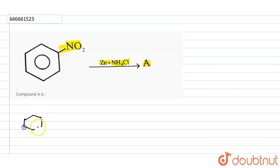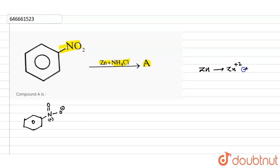Zinc will be oxidized to Zn²⁺, and in that way it will donate electrons. This nitrobenzene can be written with a double bond O and oxygen with a negative charge and a positive charge on nitrogen. Zinc donates two electrons — one electron will come and attack on this nitrogen group, which has a positive charge.